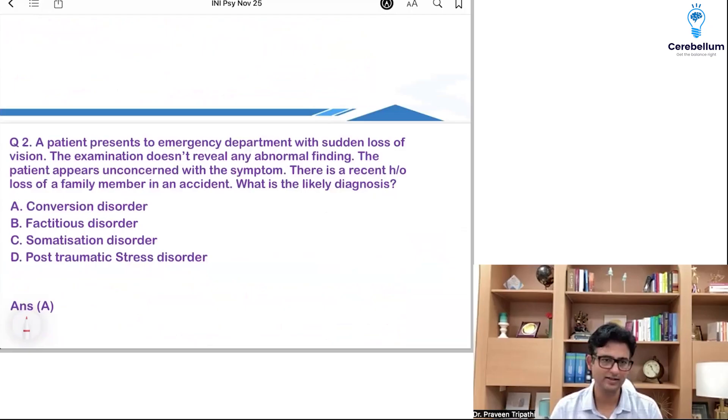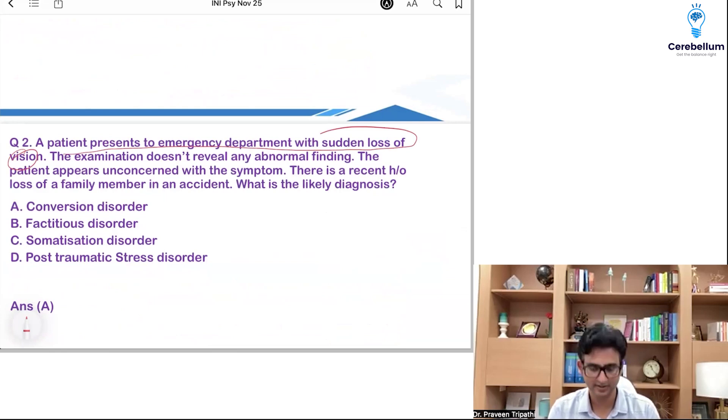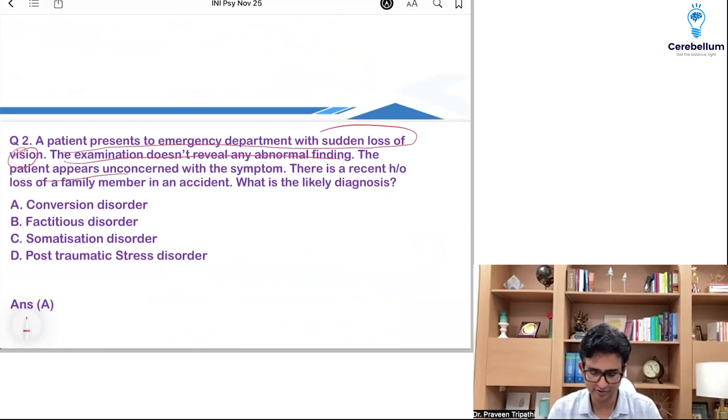Second, again a very standard question. A patient is coming to you with sudden loss of vision, a neurological deficit. There is no abnormal finding and then there is the history of labelle indifference, lack of concern with the symptom. And then they have also given history of loss of family member in an accident. So, everything goes towards conversion disorder. This is a standard question. Labelle indifference is being asked every single in every single exam. I am sure all of you got it right.